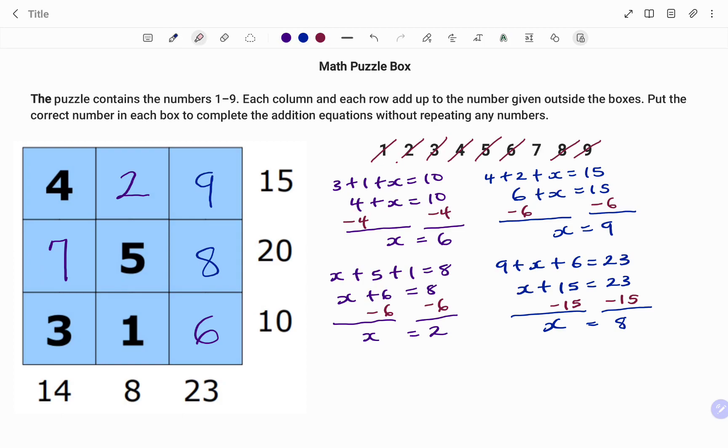And a quick check will be, I'm going to add all the numbers on that column. It must give me 14. So I have four plus seven plus three. Seven plus four, 11 plus three, which is 14. So my last number is definitely seven. Thanks for watching, bye.